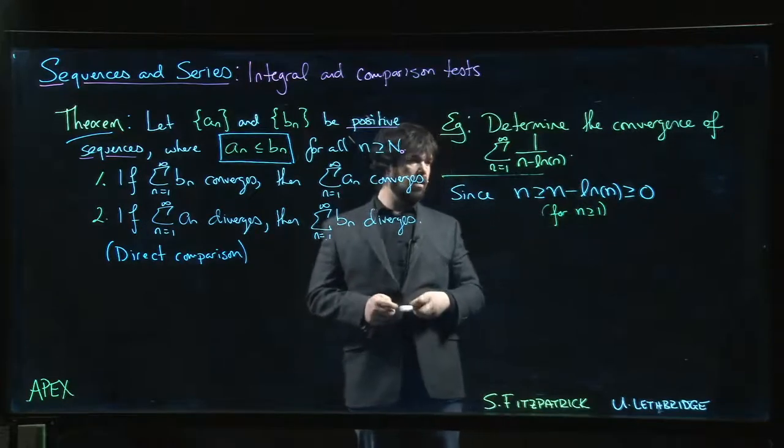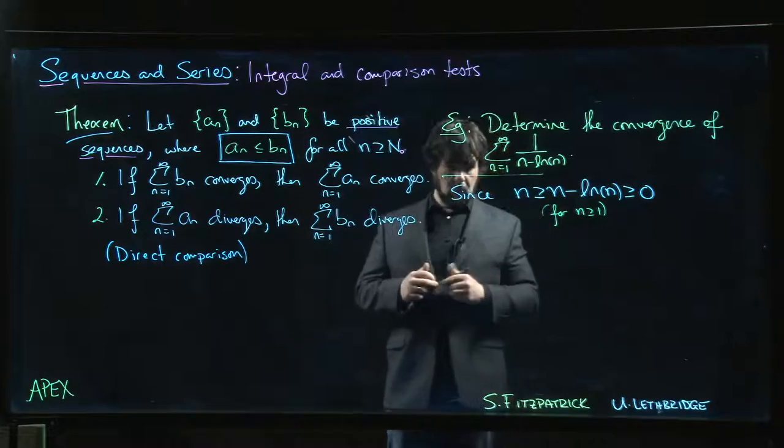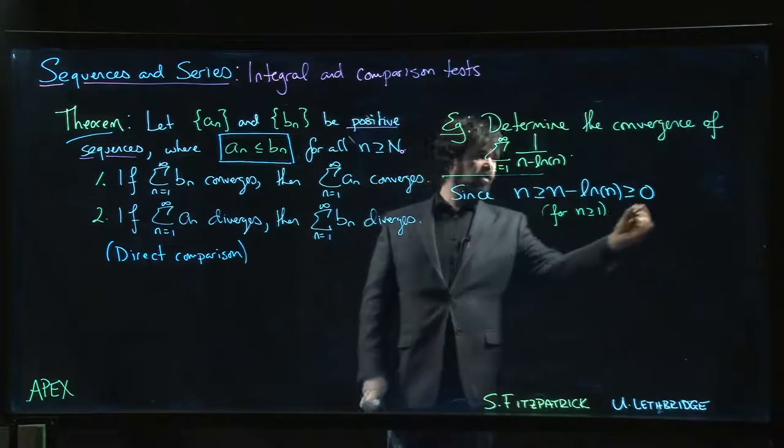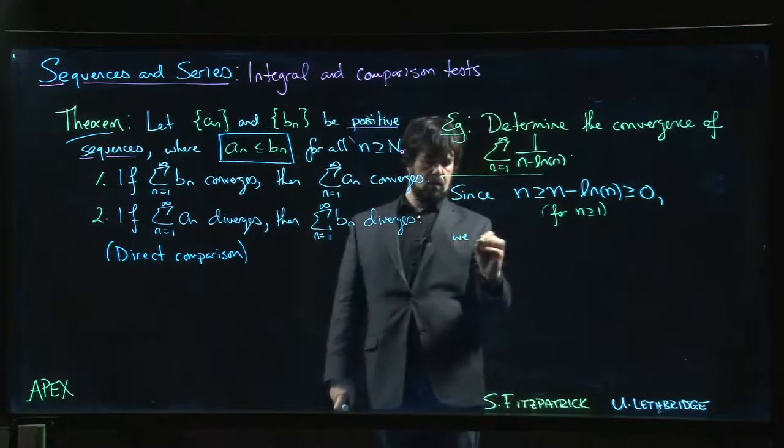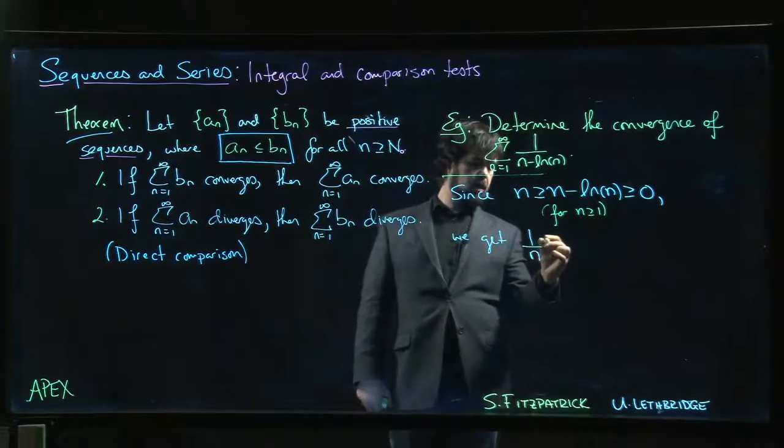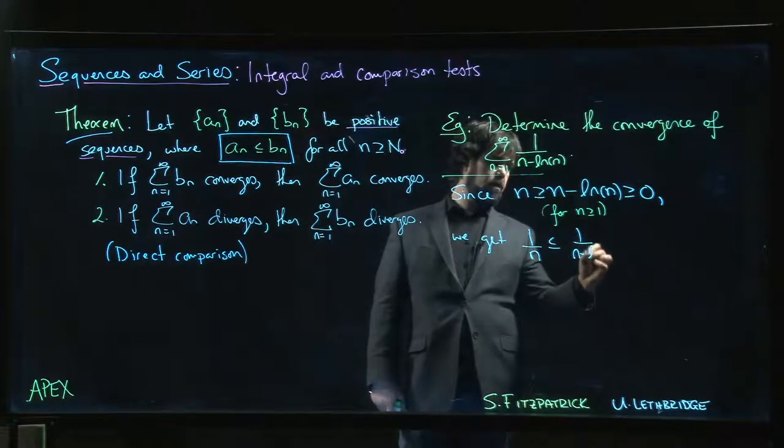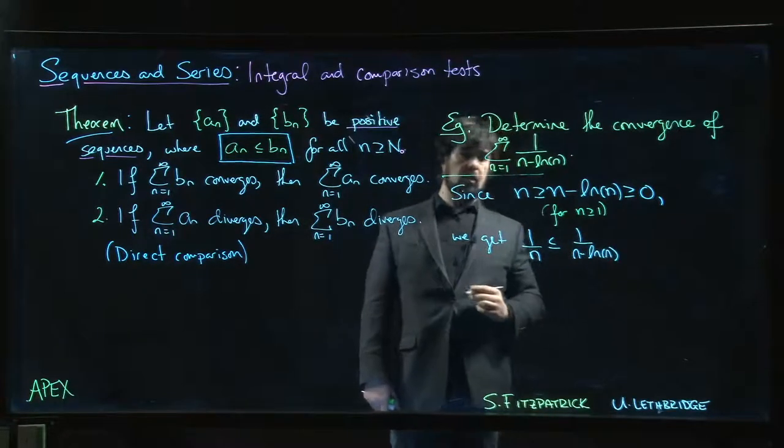We have that comparison. Well, since both of these are positive, we can take reciprocals, inequality reverses, and we get that 1 over n is less than or equal to 1 over n minus the natural log of n.